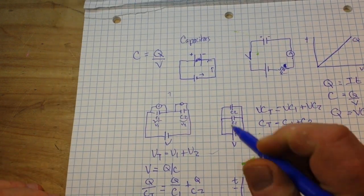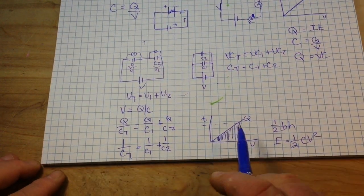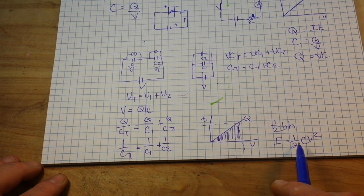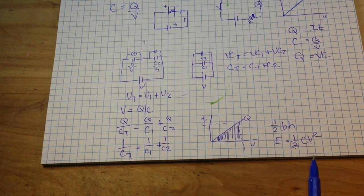Remember, no current flows between the plates of a capacitor and the energy of the capacitor is this simple formula. Half the capacitance times the voltage squared. That's the basics.